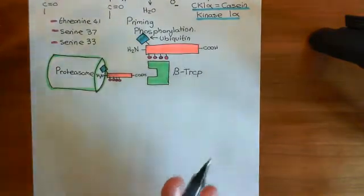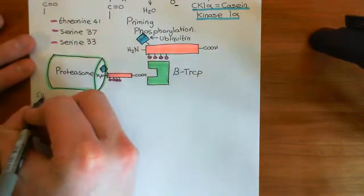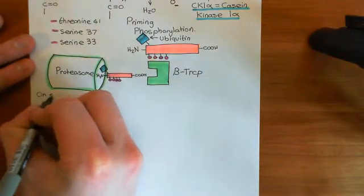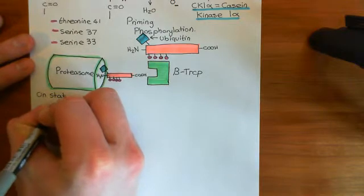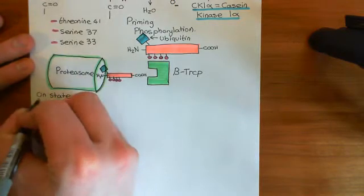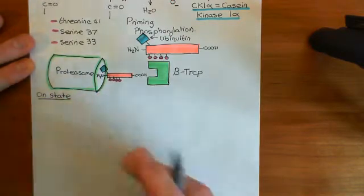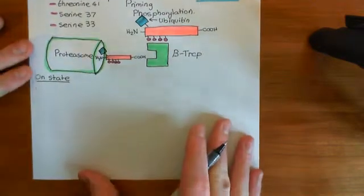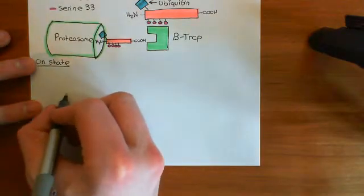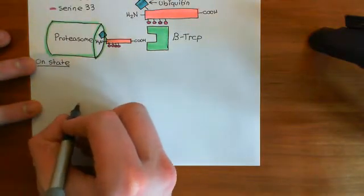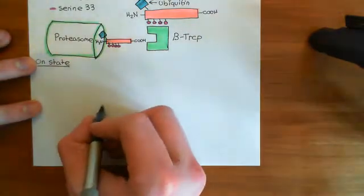What we now want to see is the on state of the Wnt-beta-catenin pathway, which is when there is going to be Wnt present in the extracellular fluid, and it will be activating our frizzled receptor and our LRP5-6 receptor.